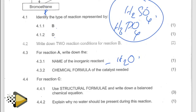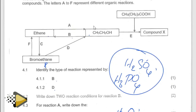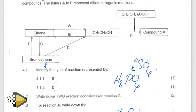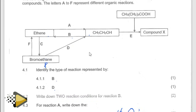Write down the balanced chemical equation with the structural formula of reaction C. When you look at reaction C — from here to here — you just have to write from here to here. This is C, from here to here. It said bromoethane to bromoethene.